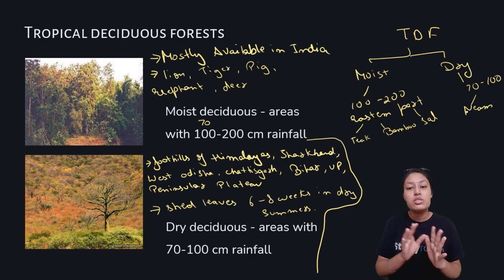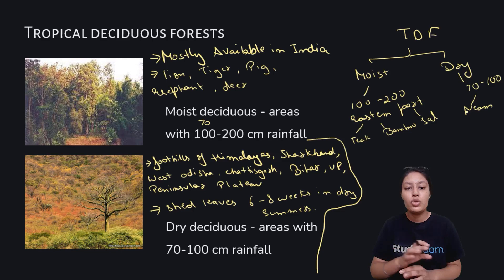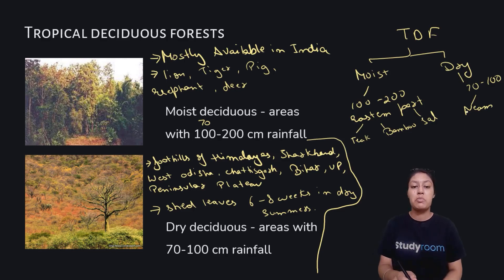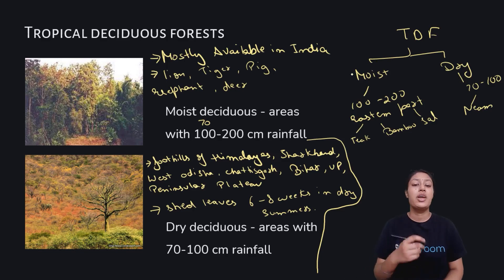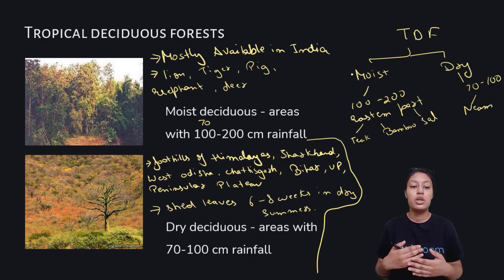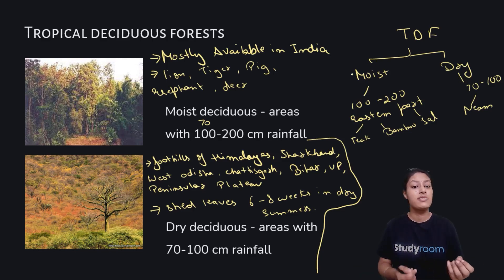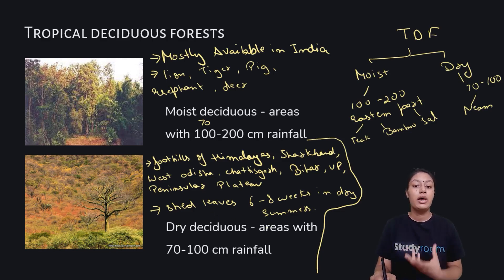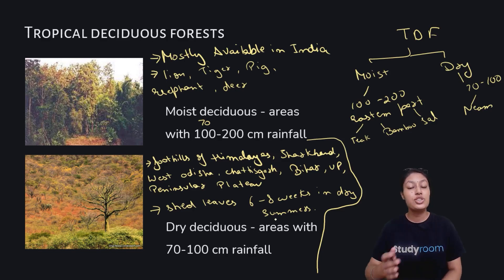Tropical deciduous forest is mostly available all over central India. The animals found there are mostly lion, tiger, pig, elephant, deer, and monkey. In these regions rainfall is not very prevalent, so the trees do not get enough water for survival. What they do is shed their leaves for about six to eight weeks in the dry summer season so that they can survive and get moisture from the roots.